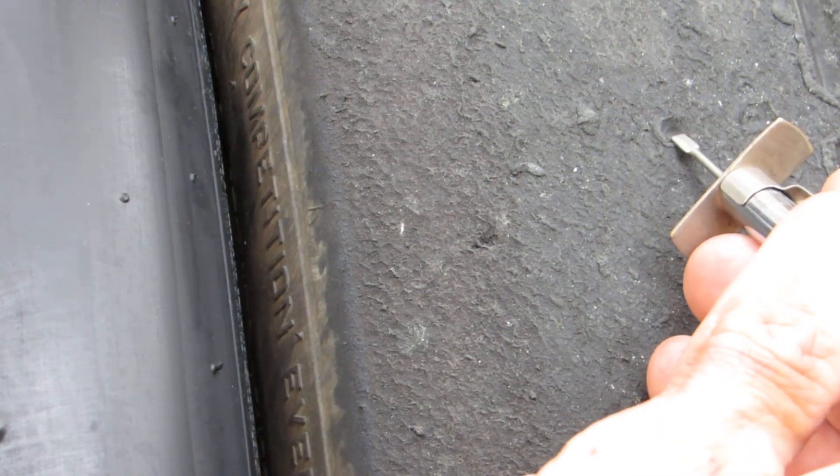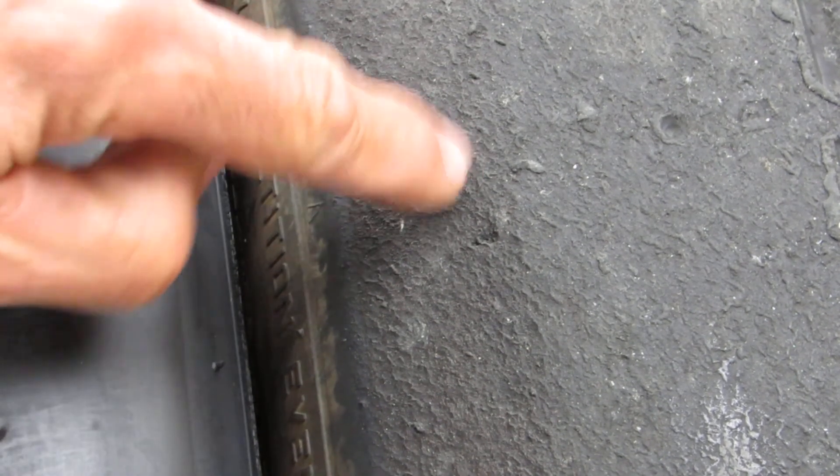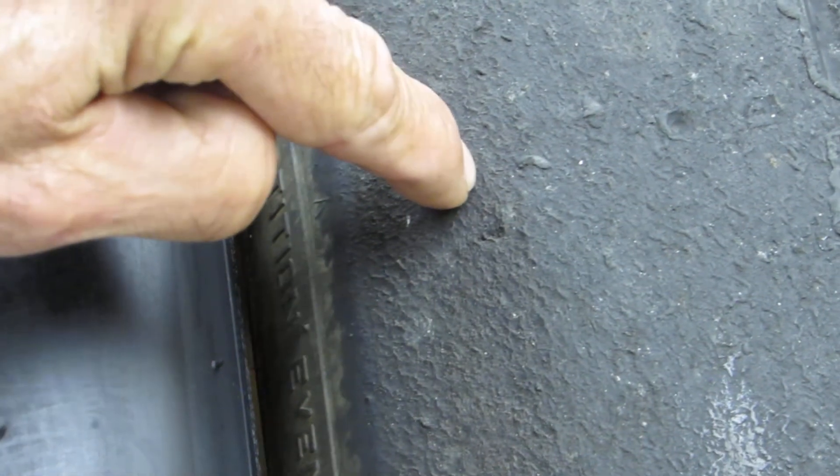So what we do in Super Miata is when we get this tread wear indicator, the one that's normally here, when we see it's pretty low we pull them off of race duty and use them just for practice. Over inflate them a little bit so they'll kind of stretch the life out, and we like to have a little bit of that tread wear indicator on the shoulder still showing before we start a race to make sure we've got enough rubber to last the race.